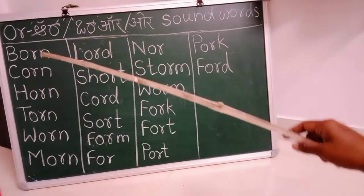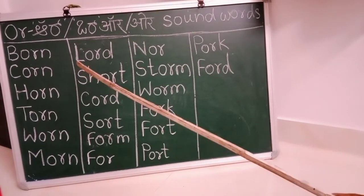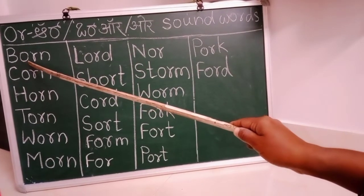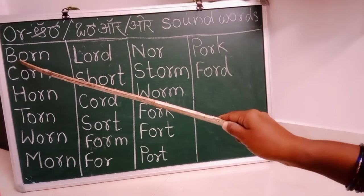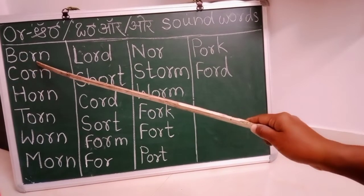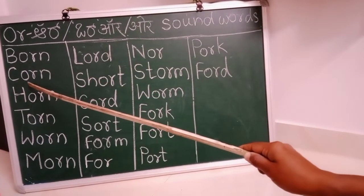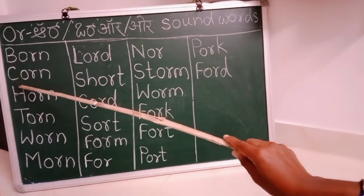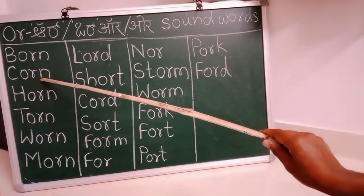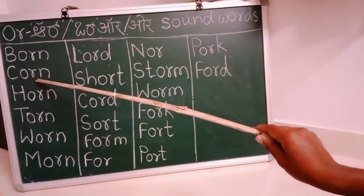So let's read the words. OR OR OR OR, barn OR OR. Corn: C, or, n. Corn. C, o, r, n. Corn.